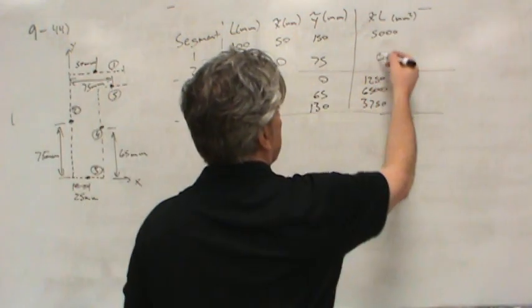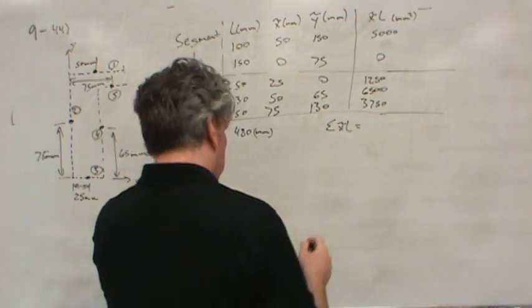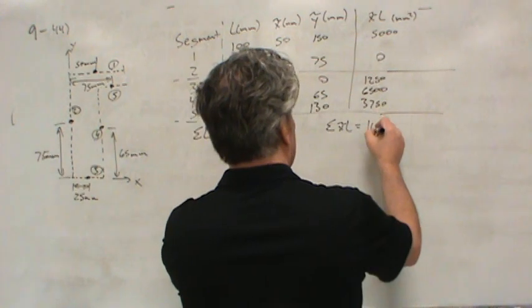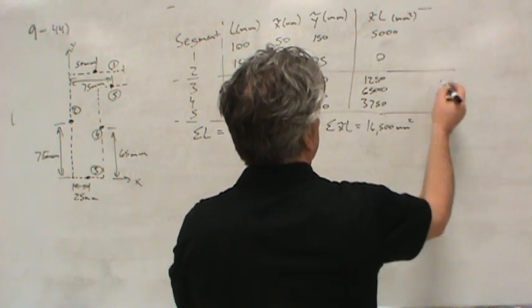If we add this entire column, the sum of the x-tilde L's, we get 16,500, and of course the units are still millimeters squared.